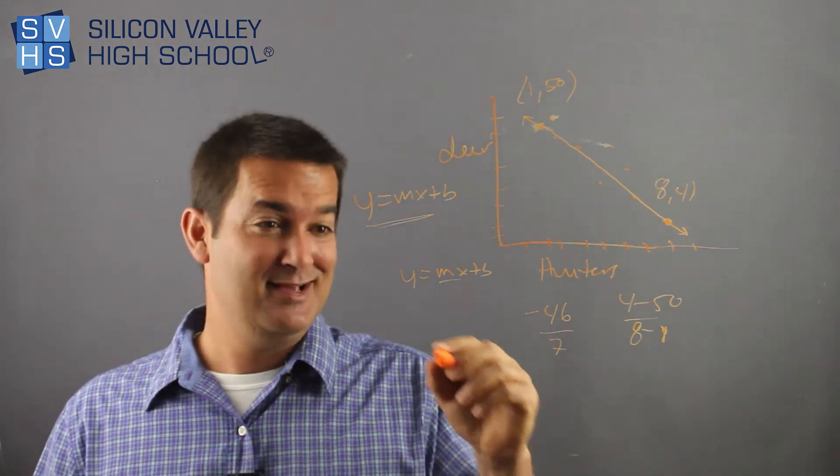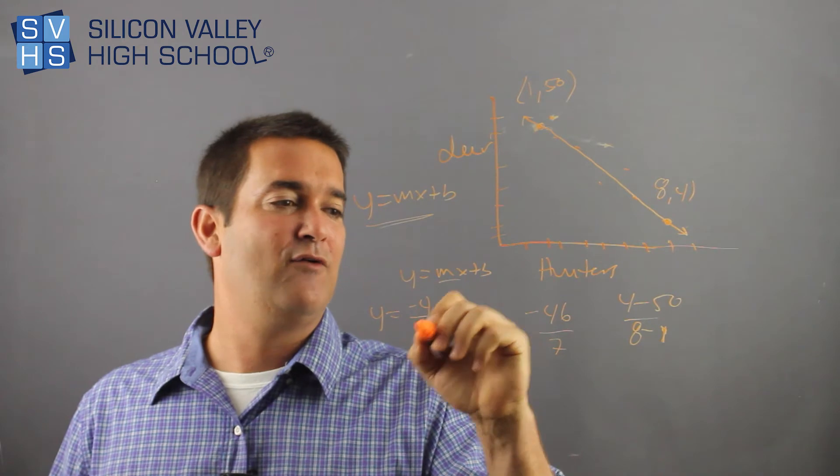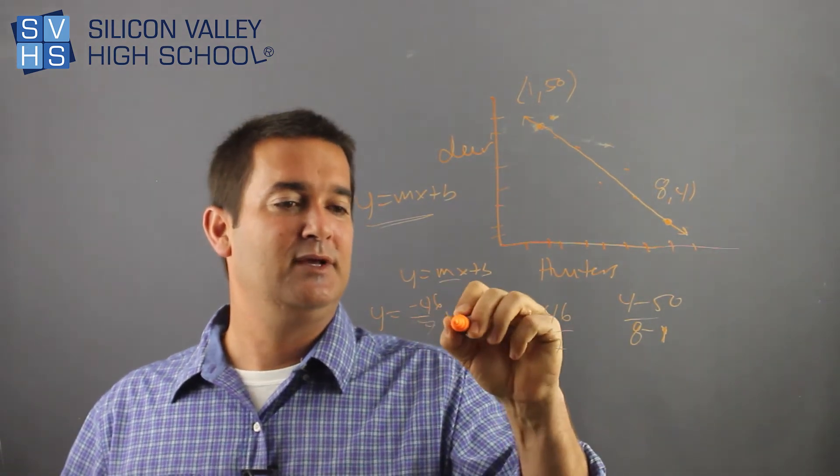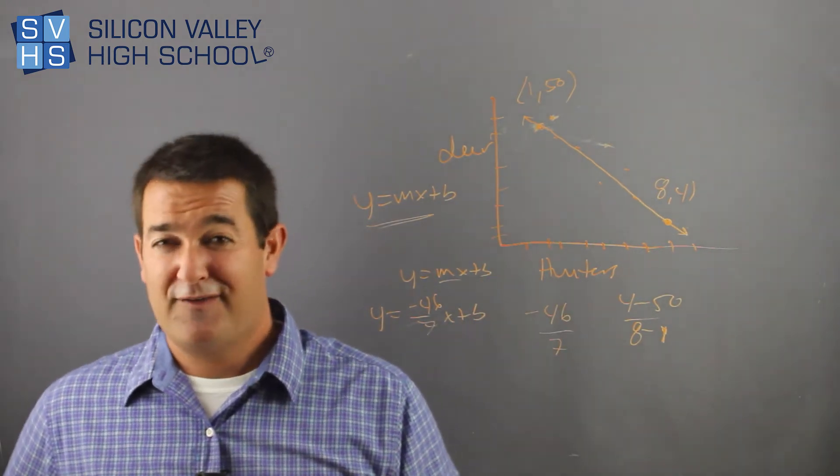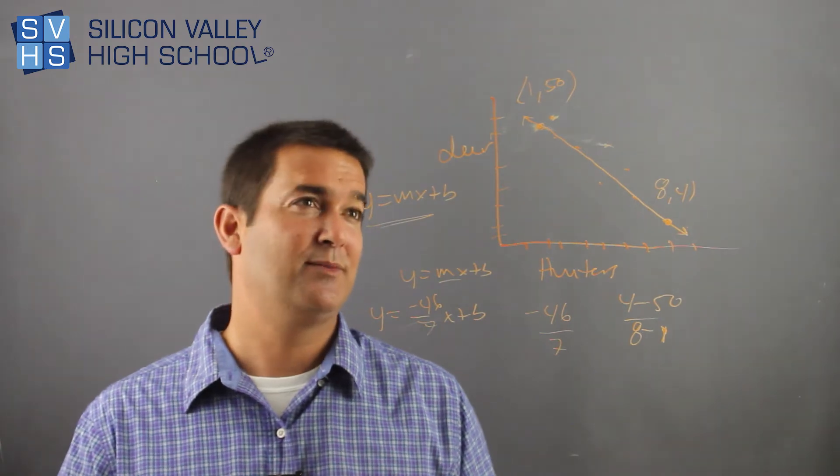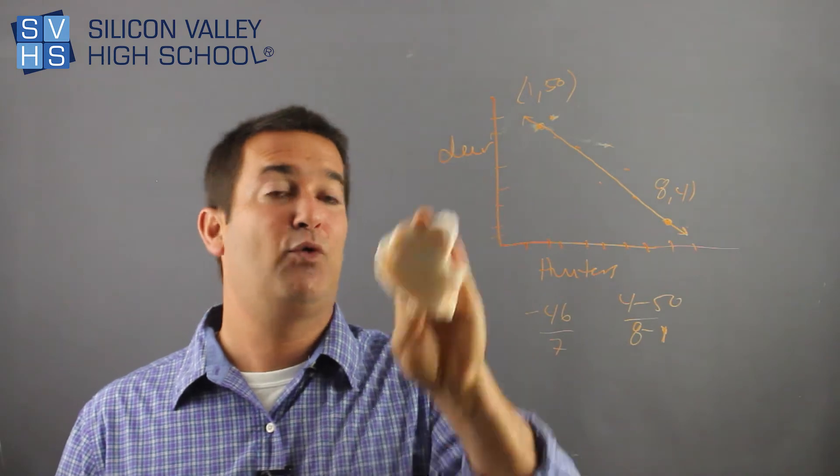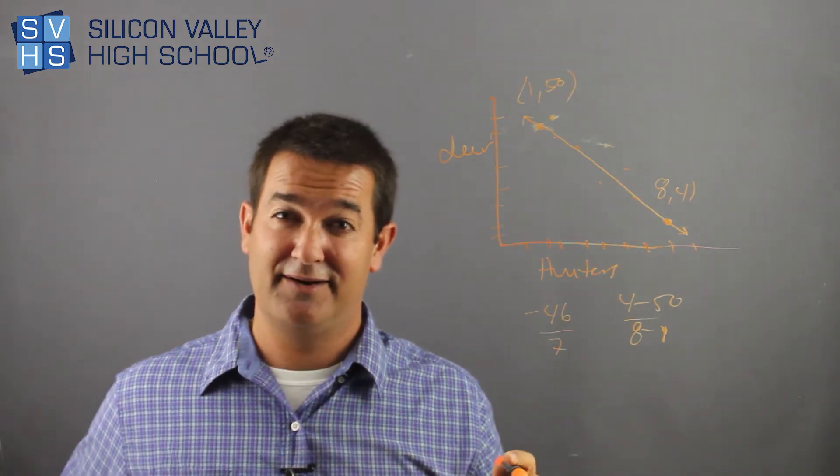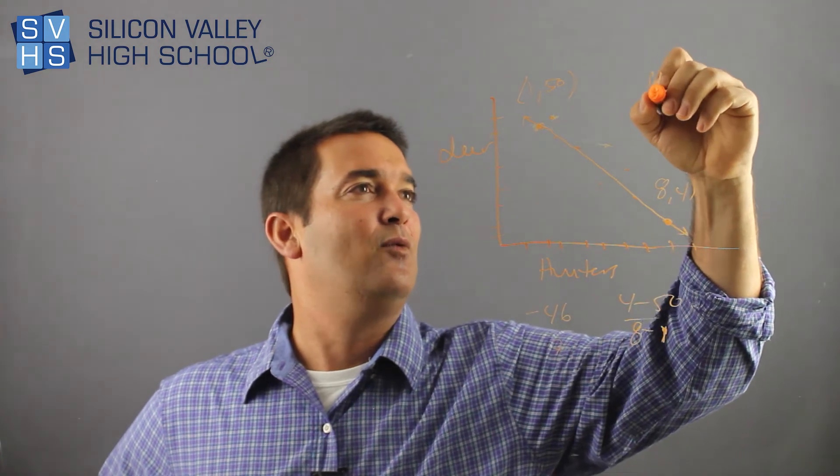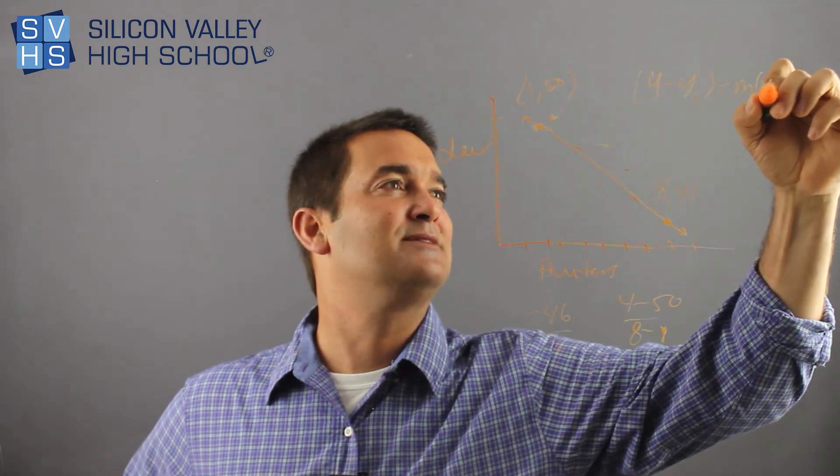That's a terrible slope. So then I'd be y equals negative 46 over 7x plus b. And then I would find my b. And actually, this is pretty dumb. I'm going to do point-slope form because this is so much easier to do. So I found my slope. We're all friends. I'm going to use point-slope form to find the linear equation of a line. I can do any form I want. That's the easiest. That would be y minus y1 equals m times x minus x1.